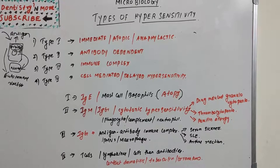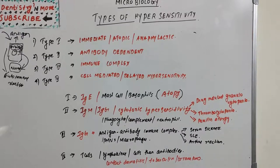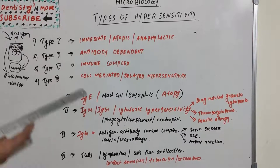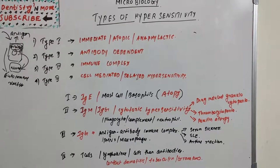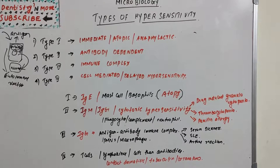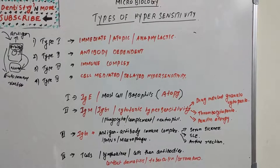Type 2 is primarily mediated by antibodies IgG and IgM and also the complement system. Phagocytes may also play a role. Lesions contain antibody, complement, and neutrophils in general. A classic example is hemolytic disease of the newborn — when an Rh-positive baby is born to an Rh-negative mother for the first time, antibodies act against the baby — which comes under Type 2 hypersensitivity.